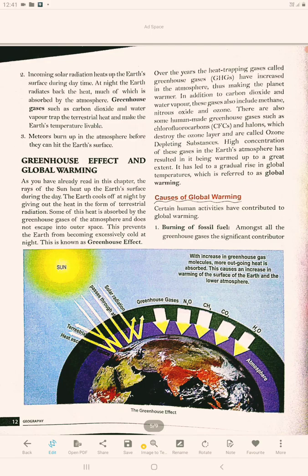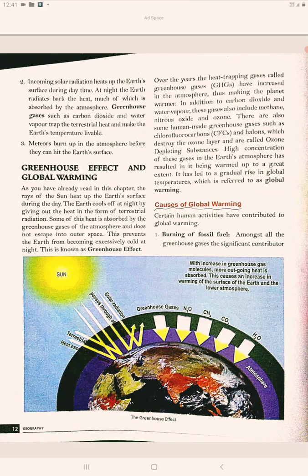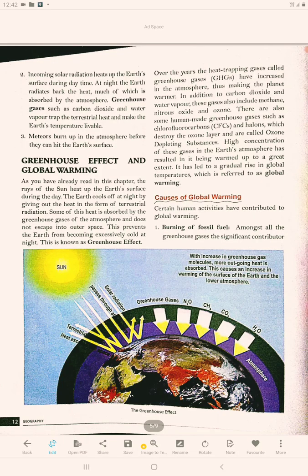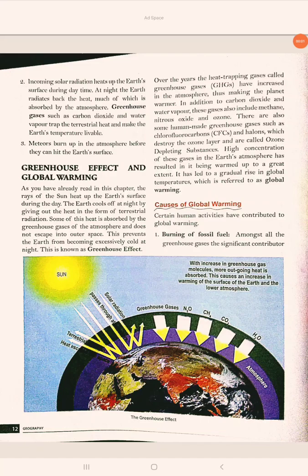Greenhouse gases such as carbon dioxide and water vapour trap the terrestrial heat and make the Earth's temperature livable. Meteors burn up in the atmosphere before they can hit the Earth's surface.